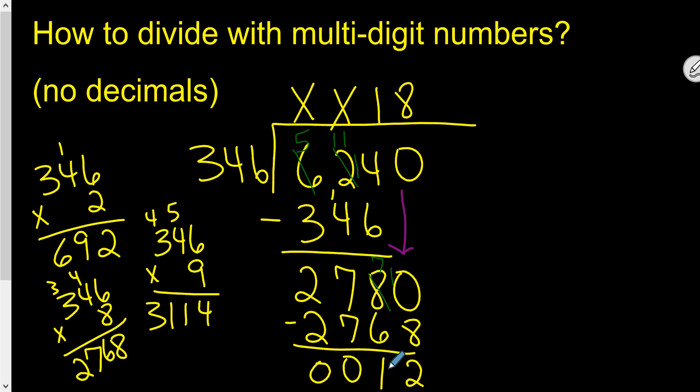No. If you have a zero right here and there's nothing else to bring down, then this would be your answer. It'd be 18. But since we have this remainder here and nothing else to bring down, we'll call it a remainder 12, 18 remainder 12.